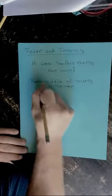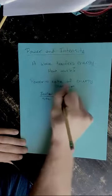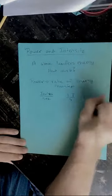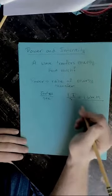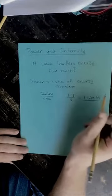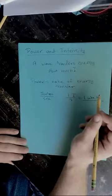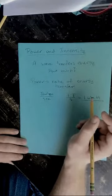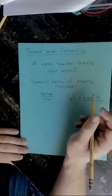Power has units of joules per second, and one joule per second is equal to one watt. So the power of a wave is given in watts. We run into this with speakers and speaker systems, which are rated in watts, and with light bulbs, which are also rated in watts. Power is one measure of how much energy is transferred by a wave.